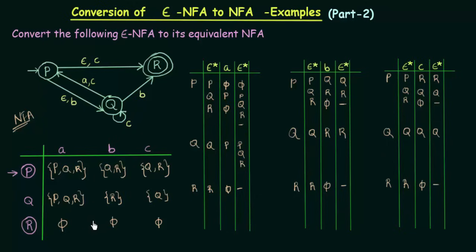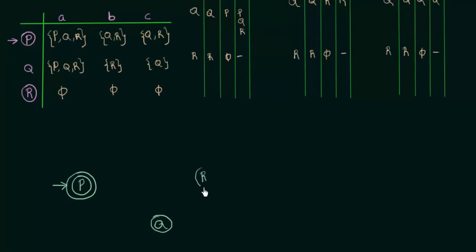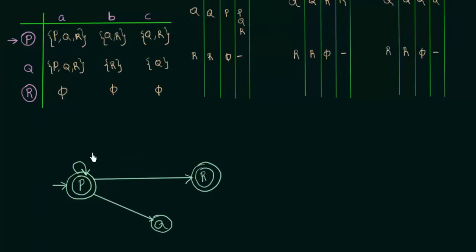Now we have the transition table for our NFA. Let's draw the transition diagram for this NFA that we have obtained. We have state P which is a final state as well as the initial state. We have state Q, and we have state R which is also a final state. P on input A goes to P, Q and R — it goes to P itself, it also goes to Q, and it also goes to R, on input A.